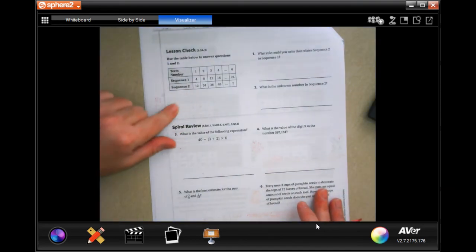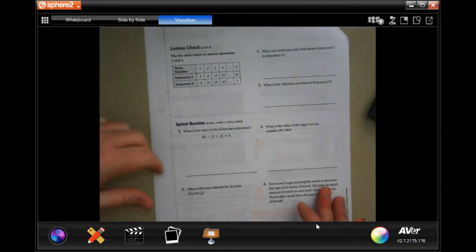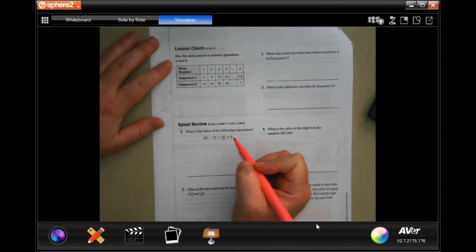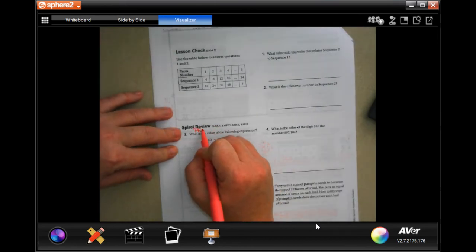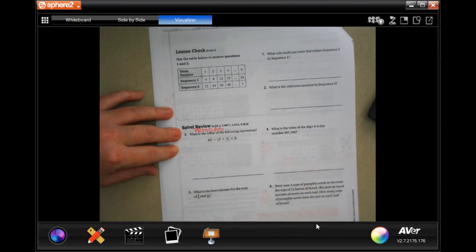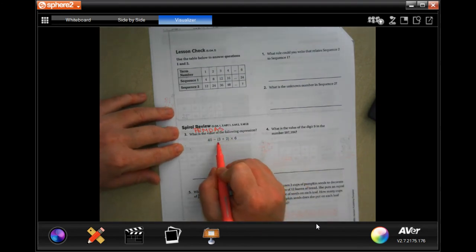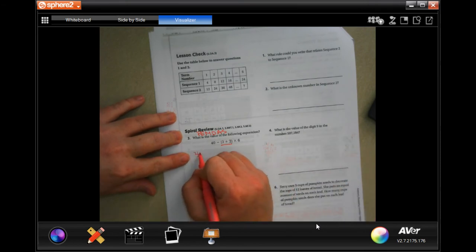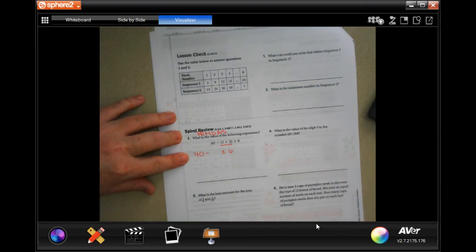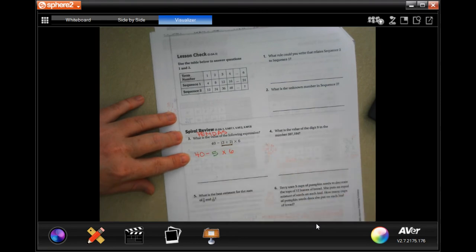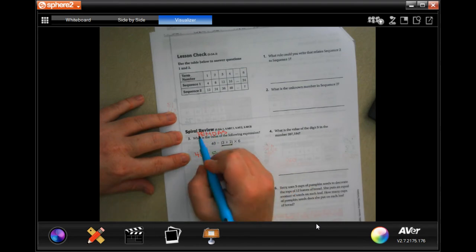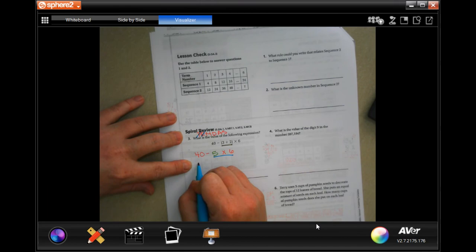We're going to go into the back where you're going to do a lesson check and spiral review. This is: what is the value of the following expression? I do have parentheses, so I'm going to rewrite everything else and solve for the parentheses. Three plus two is five.